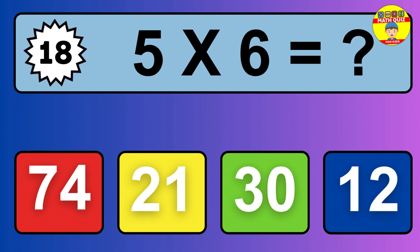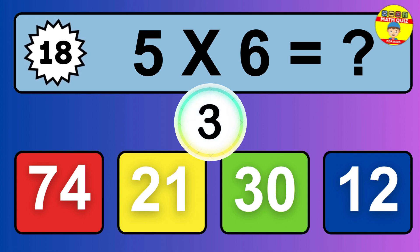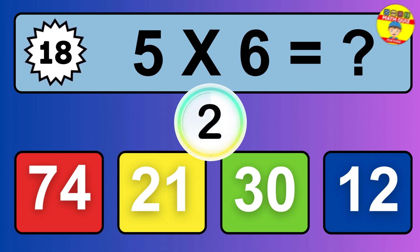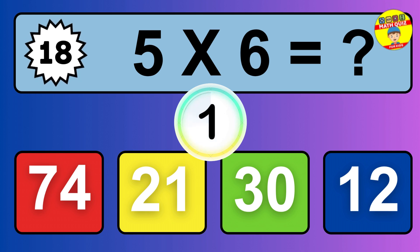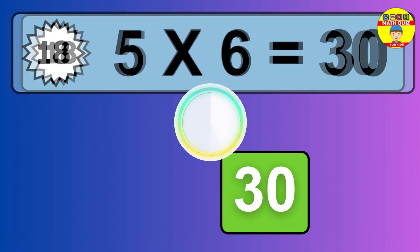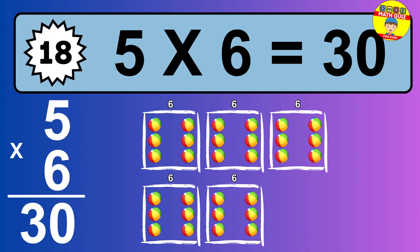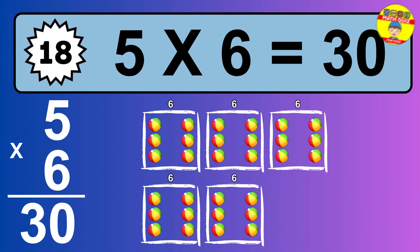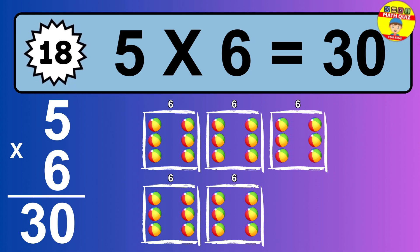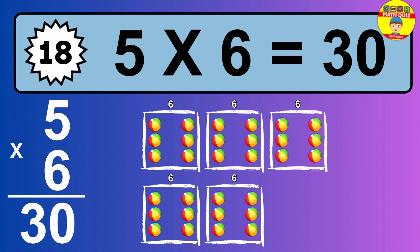Question 18. 5 times 6 equals what? The answer is 5 times 6 is 30. To calculate, we have 5 groups with 6 balls each one. So how many balls do we have? 30 balls.